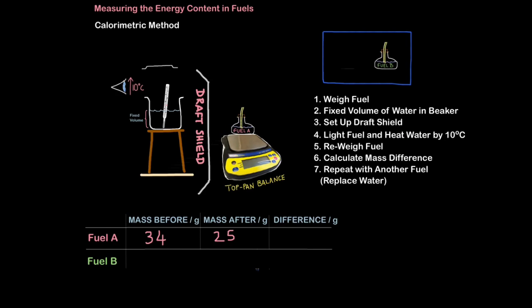So light the fuel and heat the water by 10 degrees Celsius. When that's happened I take the fuel and I re-weigh it. And let's say this time it's 25 grams, so I've burnt, in other words the difference of 9 grams of fuel. So in other words it's taken 9 grams of fuel A to heat the water by 10 degrees Celsius.